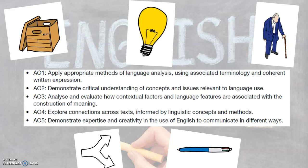AO2, represented by a light bulb, is where you get to explore concepts and issues — debating ideas, having opinions and looking at what other people's opinions are, and developing a critical understanding of those concepts. AO3 is evaluating contextual factors and how language being used is affected by the context it's used in, and how that affects the meaning that's constructed. We use the acronym GRAMPS to represent context, which stands for Genre, Register, Audience, Mode, Purpose and Subject.